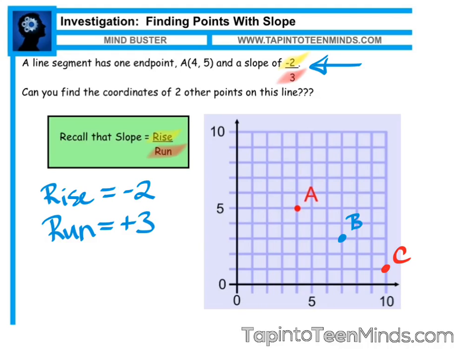We can also do the opposite. If we go back to point A and we go 3 to the left and 2 up, you'll notice that I've actually done the opposite here. So if I go back to point A and use a positive rise by going up, I'll get a third point, which is right here.